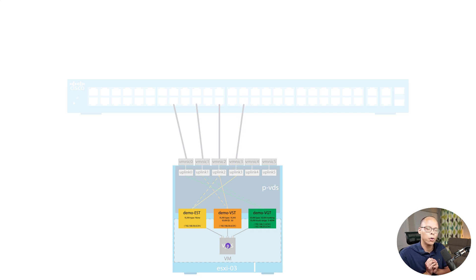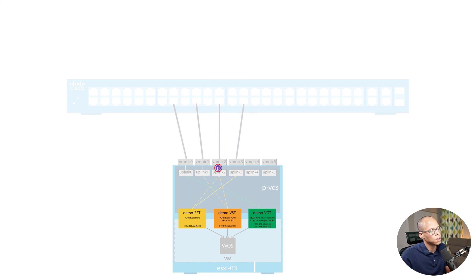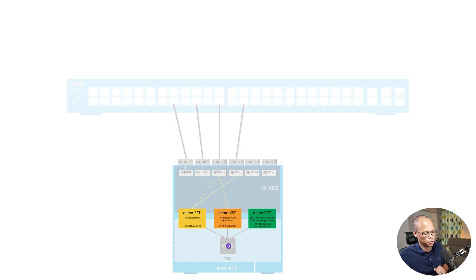That traffic goes to port group Demo EST, which then forwards it to the virtual machine. For Virtual Switch Tagging, the switch sends VLAN 30 tagged down the wire to the virtual switch. The virtual switch removes that tag and forwards the traffic to the virtual machine.